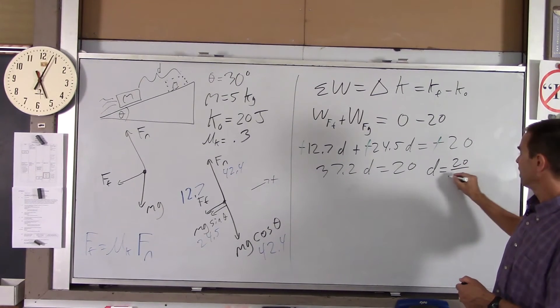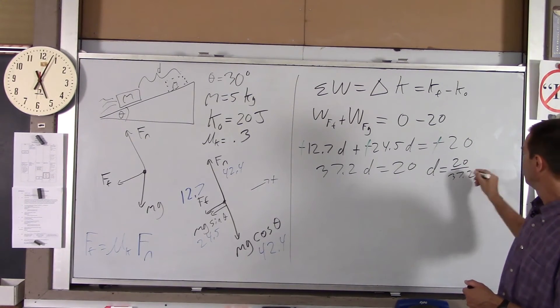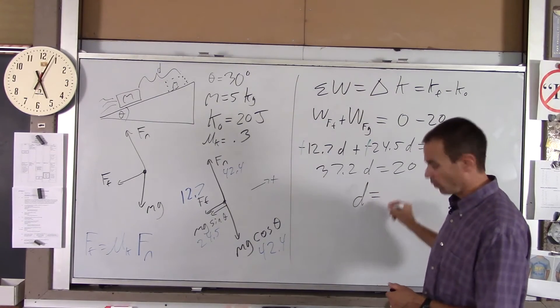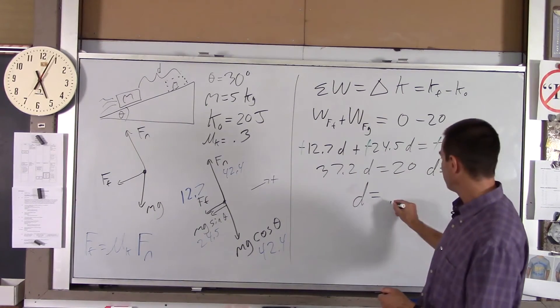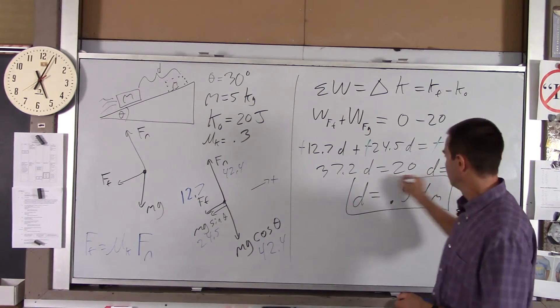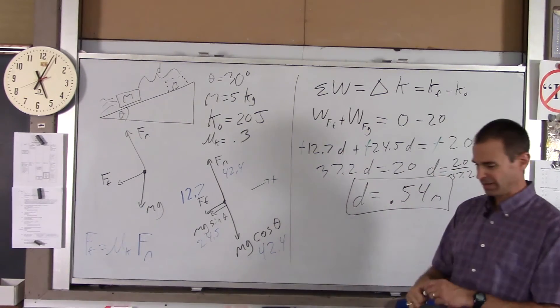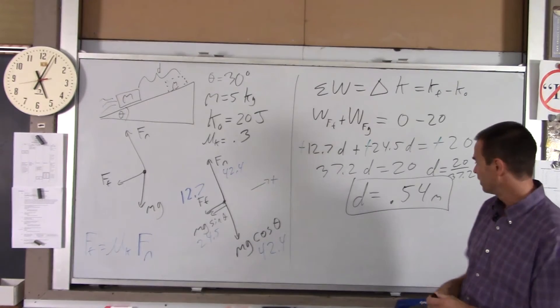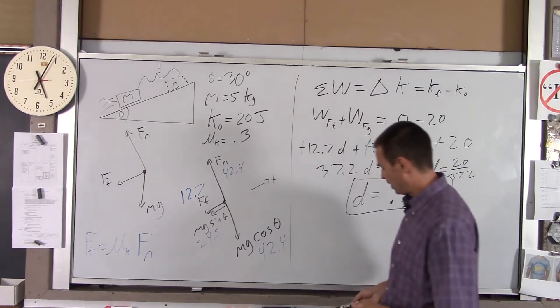d is 20 divided by 37.2, and you get d equals about 0.54 meters. So, not that far. Only half a meter, that's only about that far. So that's how far the block goes before it stops.